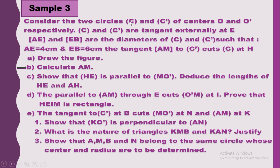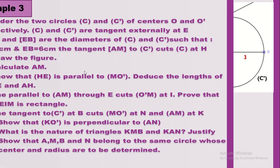Consider the two circles C and C prime of centers O and O prime respectively. C and C prime are tangent externally at E. We have AE and EB as the diameters of C and C prime respectively, such that AE equals 4 cm and EB equals 6 cm. Also, the tangent AM to C prime cuts C at a point H. We should draw the figure and then calculate the length of AM.